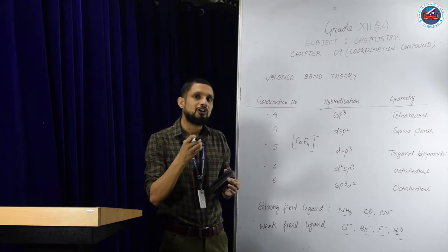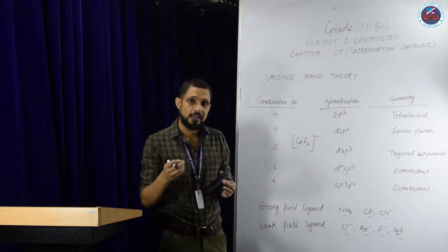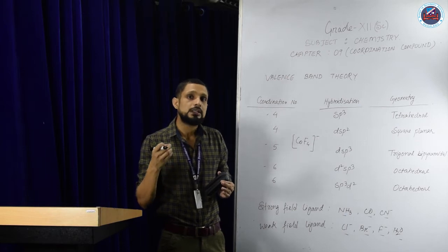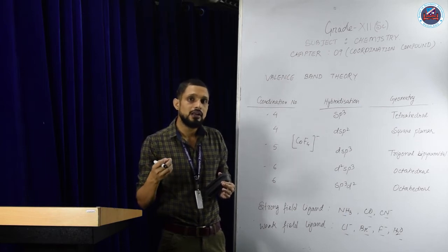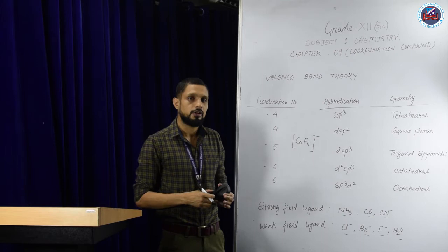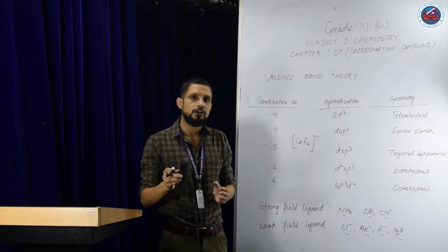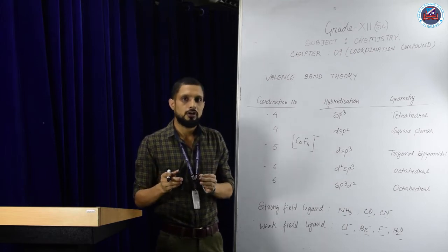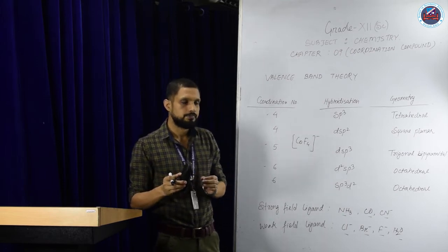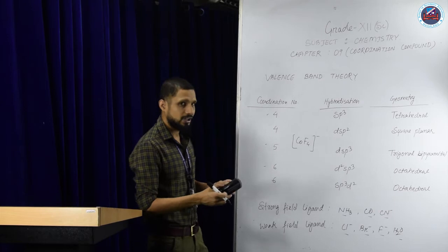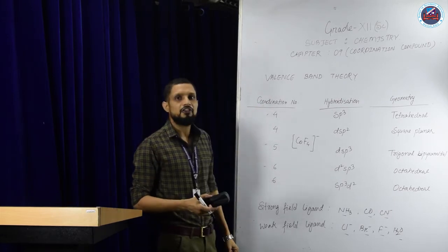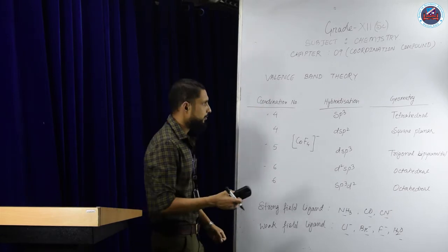It is very important that you know the electronic configuration of the first transition series, that is from scandium to zinc: scandium, titanium, vanadium, chromium, manganese, iron, cobalt, nickel, copper, and zinc. Knowing the electronic configuration is very important. So let us take an example and discuss valence bond theory.